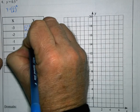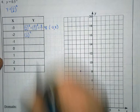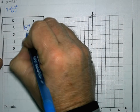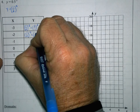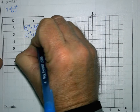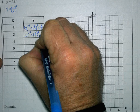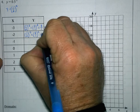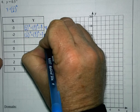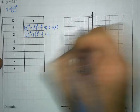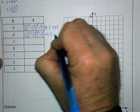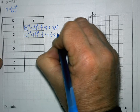With x equals negative 2, I get one-half to the negative 2 power. Rewriting with positive exponents, I reciprocate the base to get 2 over 1 to the positive 2 power. 2 squared is 4 and 1 squared is 1, so 4 over 1 equals 4. My next point is when x is negative 2 and y is positive 4.